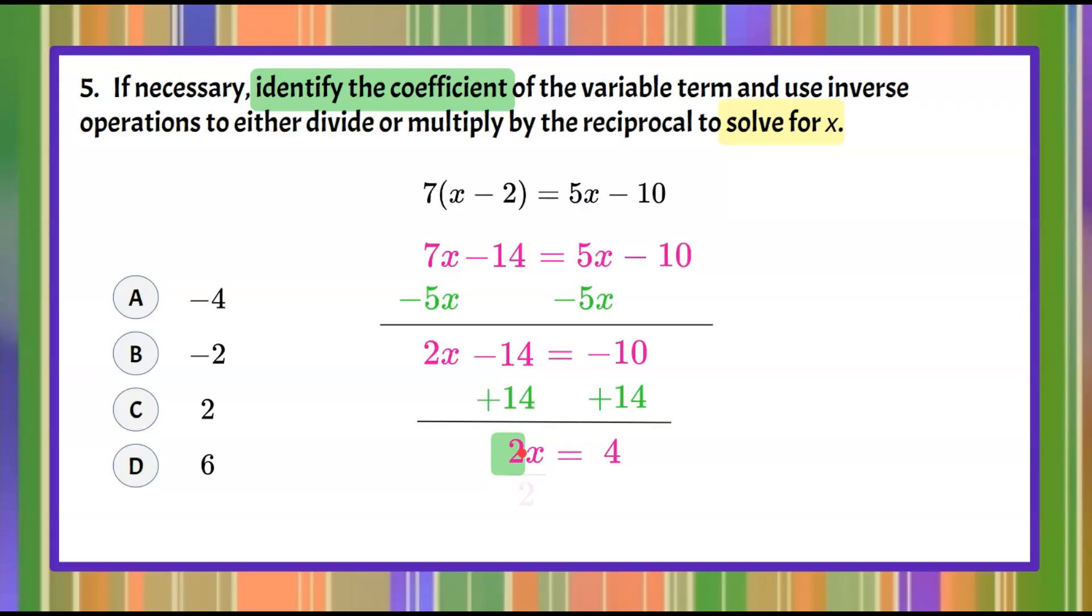So we're going to divide both sides by 2 remembering whatever I do to one side of the equal sign I must do to the other. So let's solve 2 divided by 2 is 1 or 1x leaving me x equals and 4 divided by 2 is 2. So step 5 is complete and I have a solution of x equals 2.